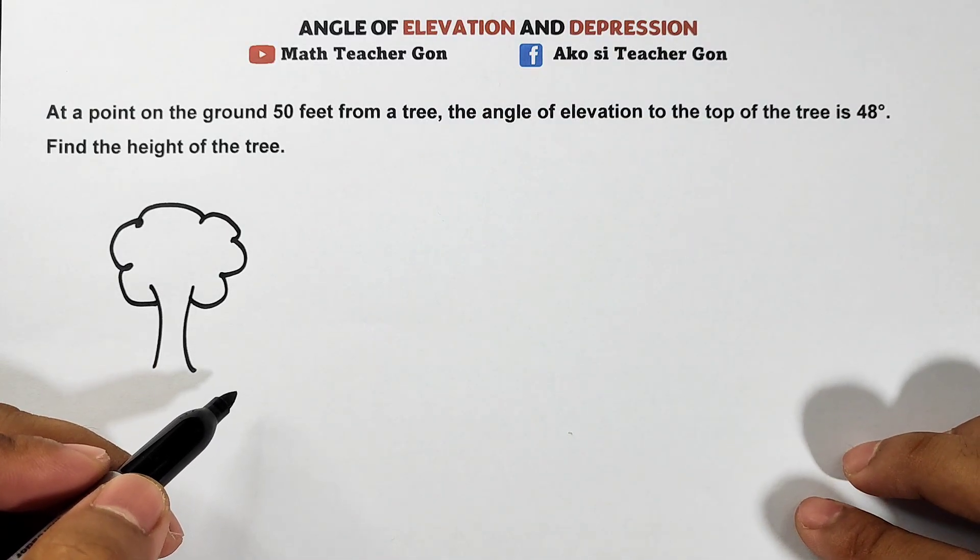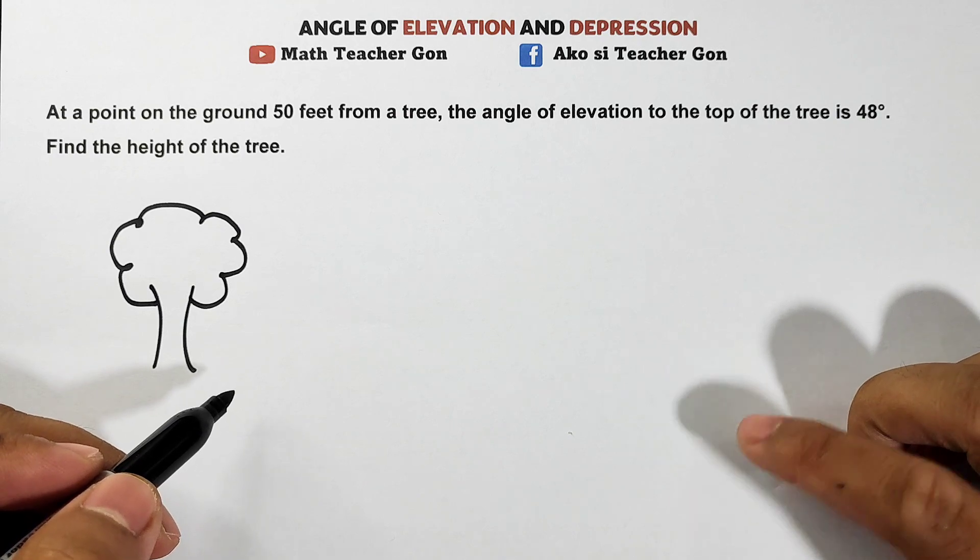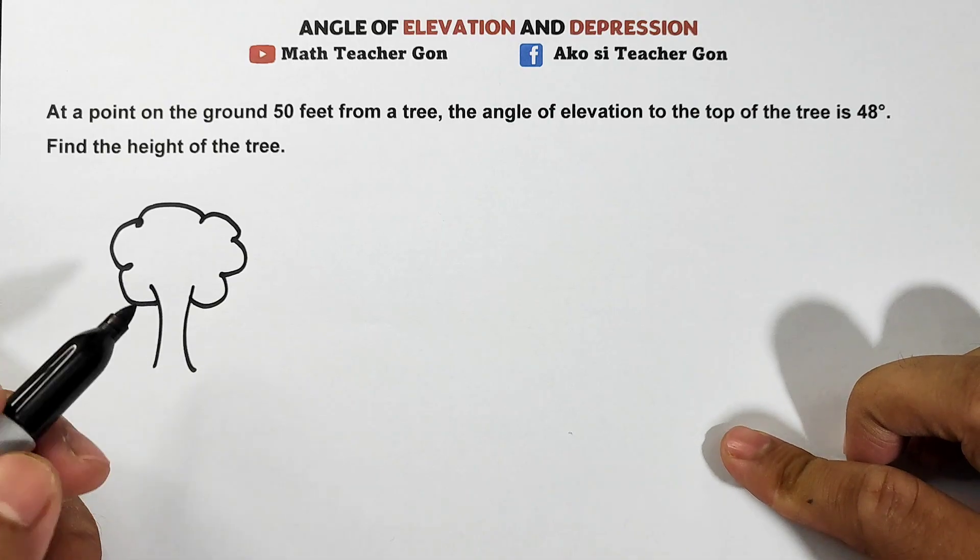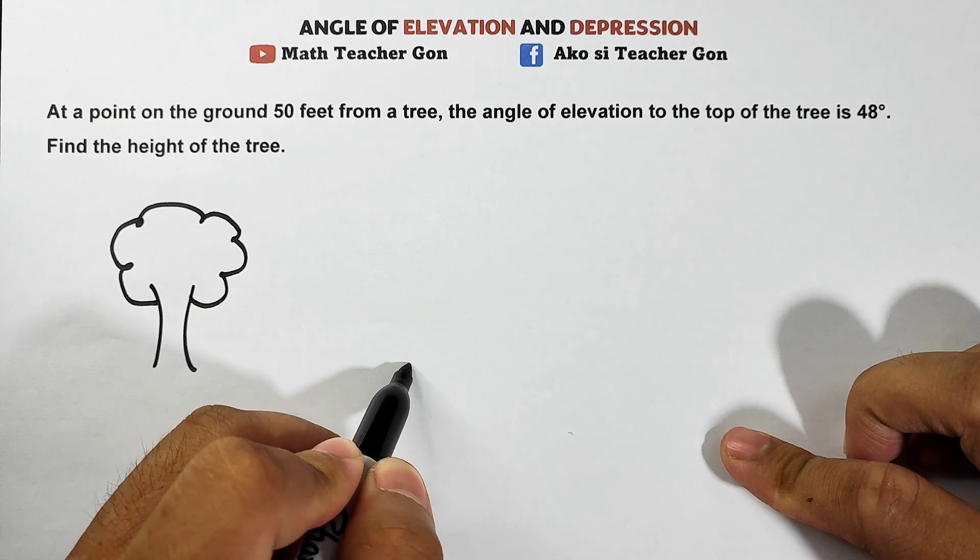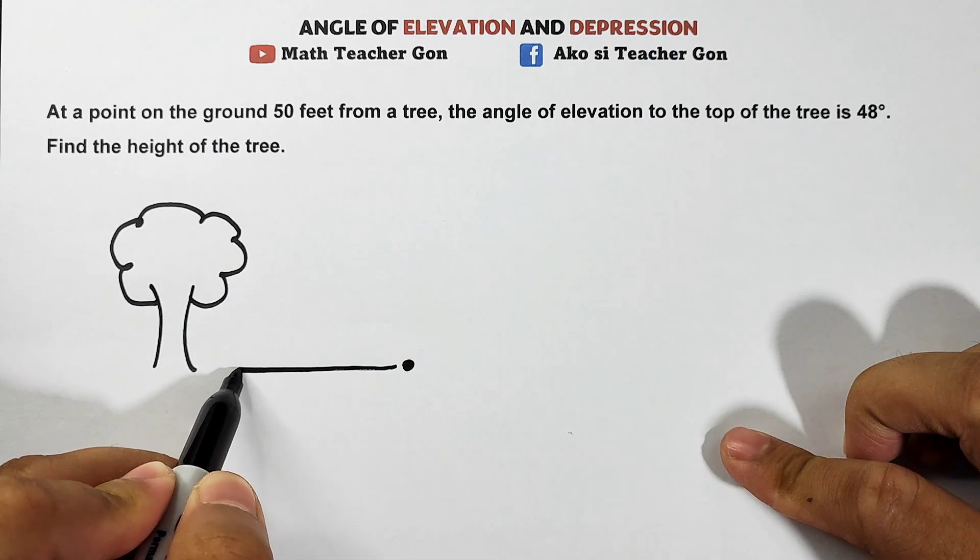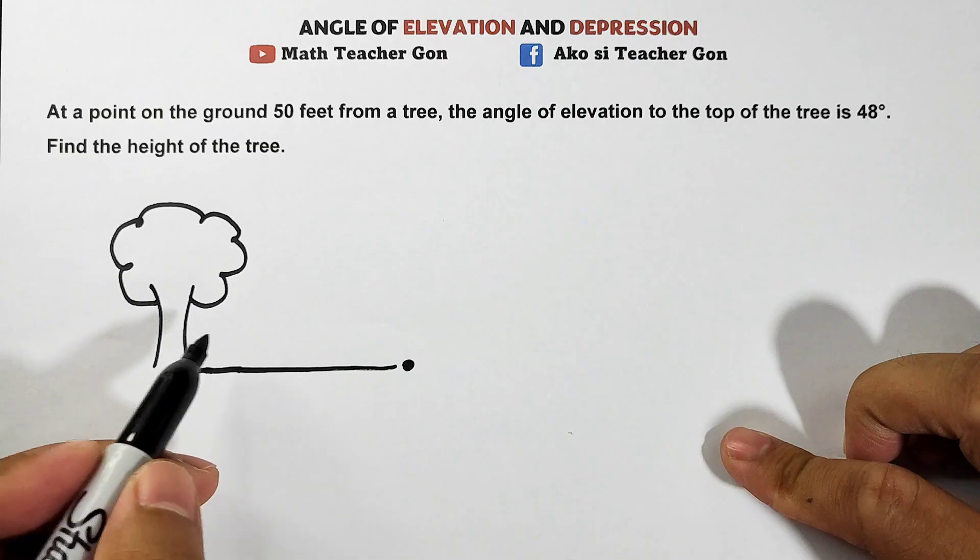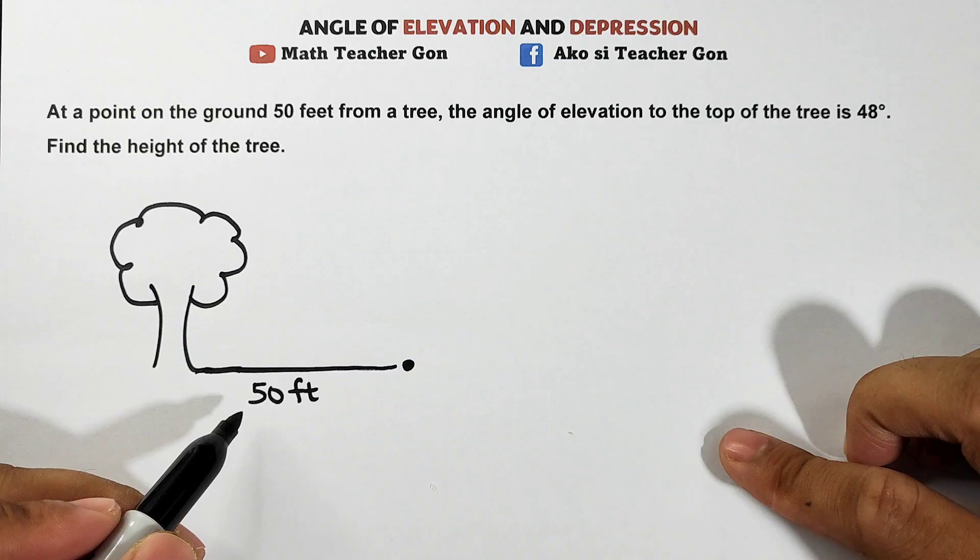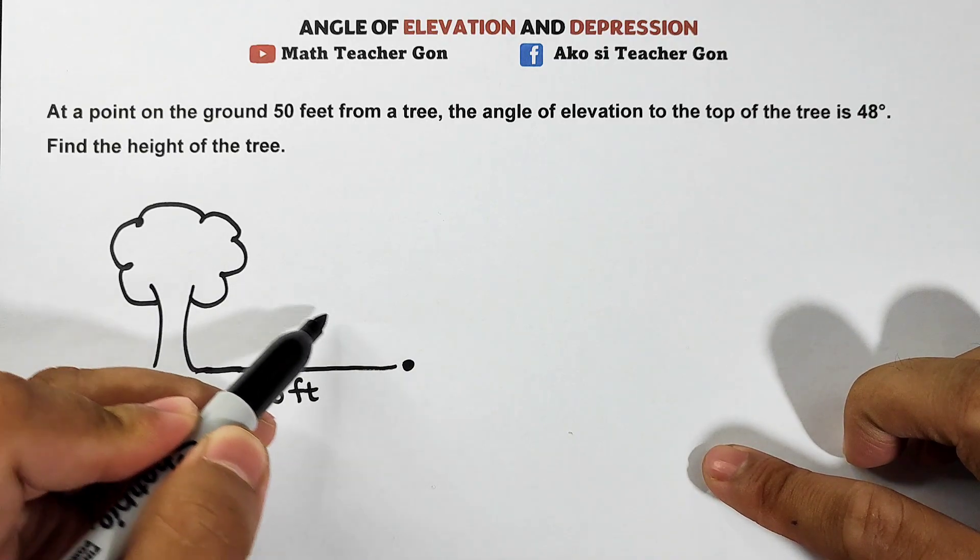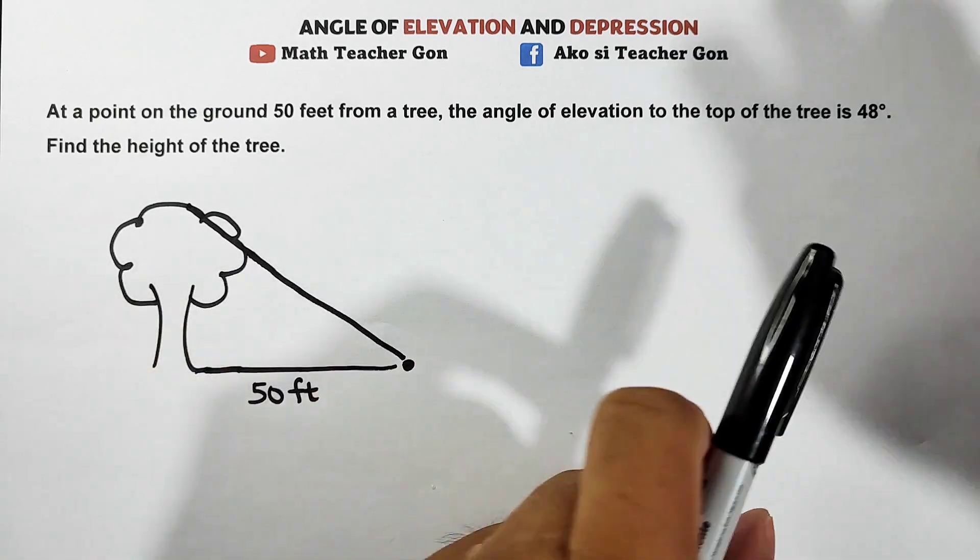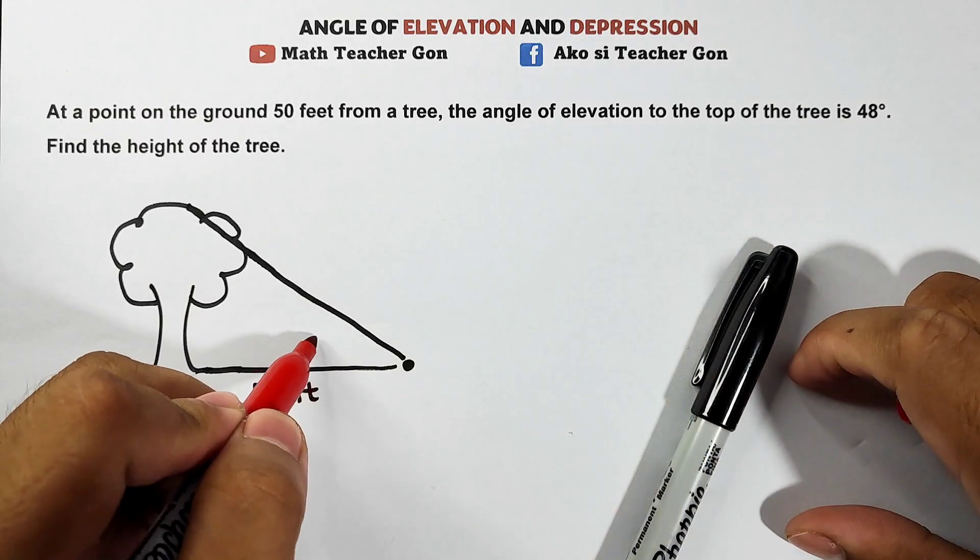I hope you get the concept. We have our tree. From a point on the ground 50 feet from the tree, let's assign a point here. From here going to the tree is 50 feet. Then it says the angle of elevation to the top of the tree is 48 degrees. From this point going here, let's draw a line. The angle of elevation is 48 degrees.